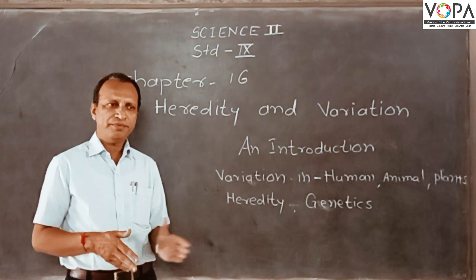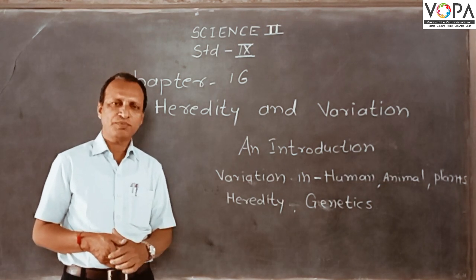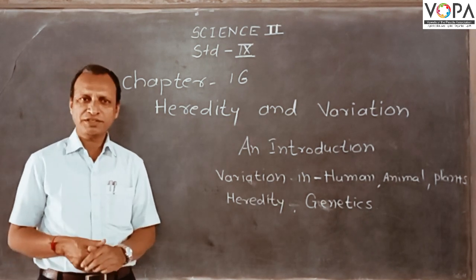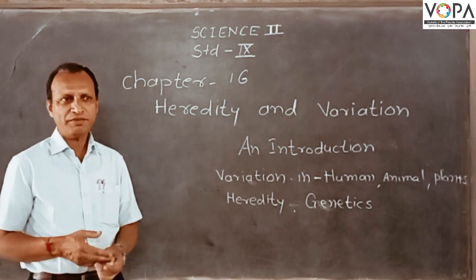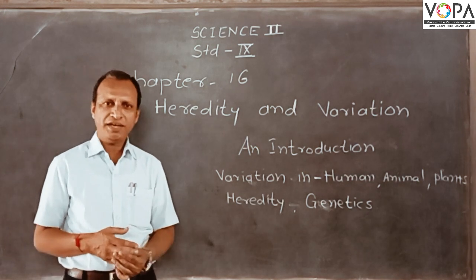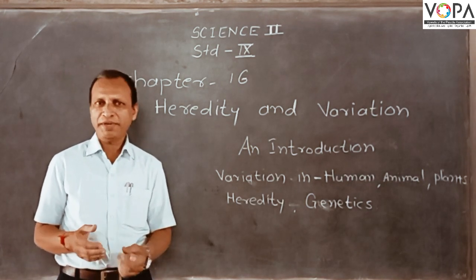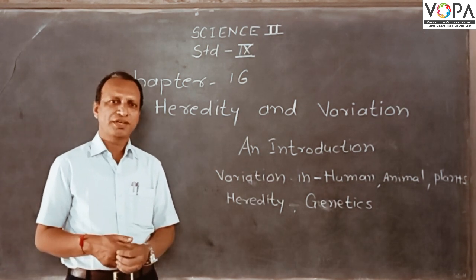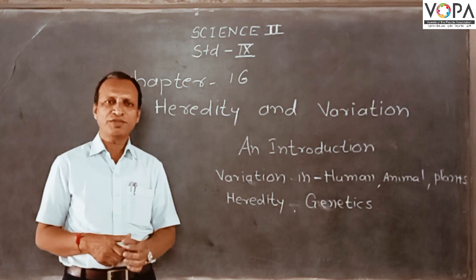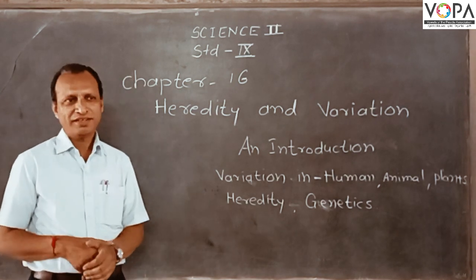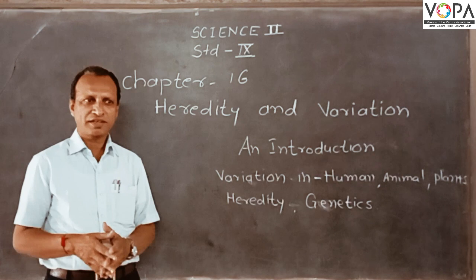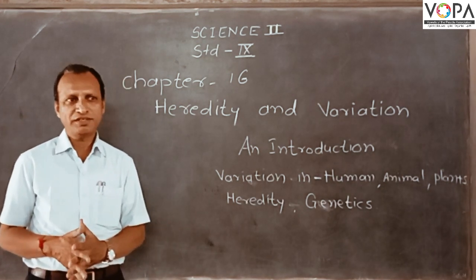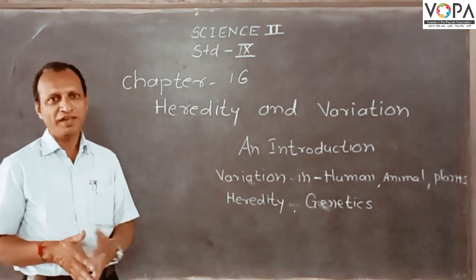Due to heredity, we get many characteristics from our parents. Some characteristics are useful and some are powerful. Our height and talent are gifts from our parents. But at the same time, some diseases are also passed from parents to their offspring, such as diabetes and other genetic problems. We learn about these genetic diseases in this chapter.